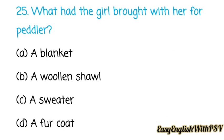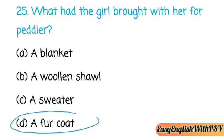Question number twenty-five: What had the girl brought with her for the peddler — a blanket, a woolen sole, a sweater, or a fur coat? What was the valet carrying? The correct answer is: a fur coat.